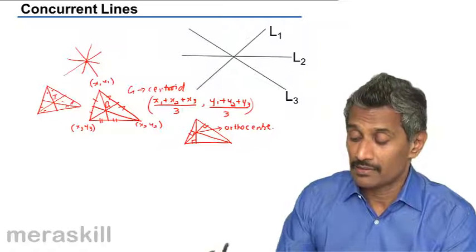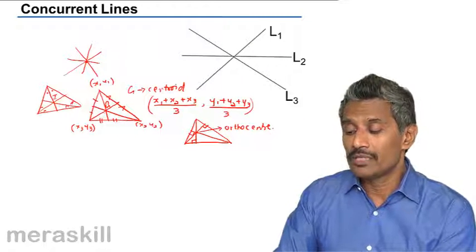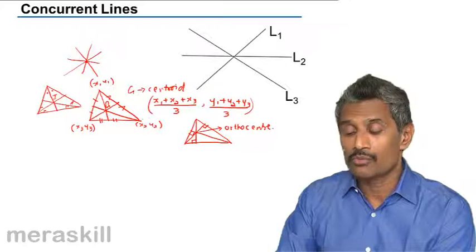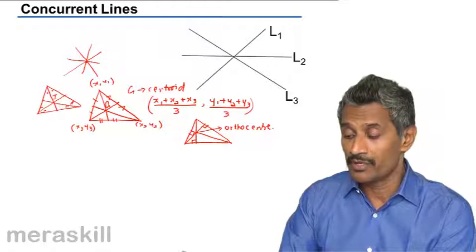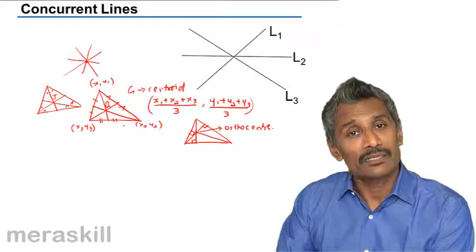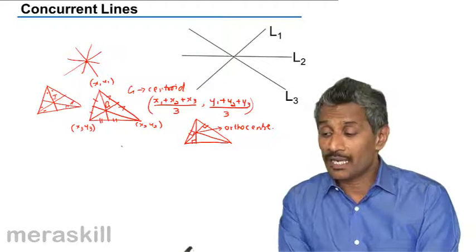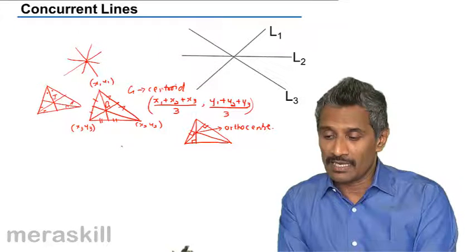So whenever more than two lines—three or more lines—pass through a single point, we call them concurrent lines. So this is what we understand by concurrent lines.